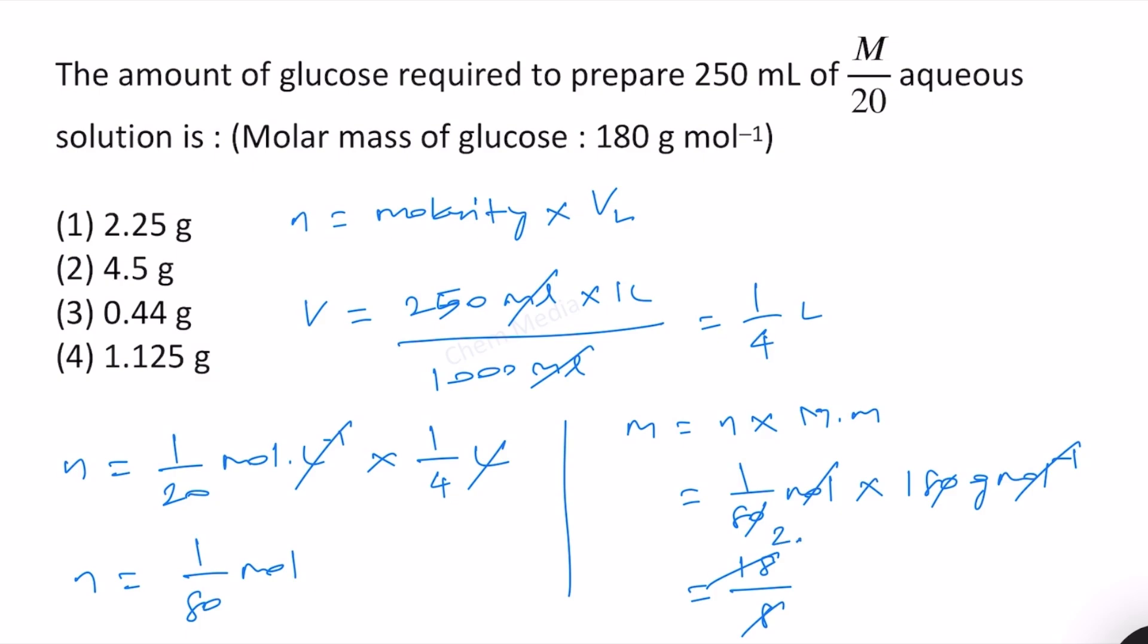Remaining 20. 2 times 8 is again 16. Now 40. 5 times 8 is 40, and therefore 2.25 grams. Therefore, the correct answer is option 1.